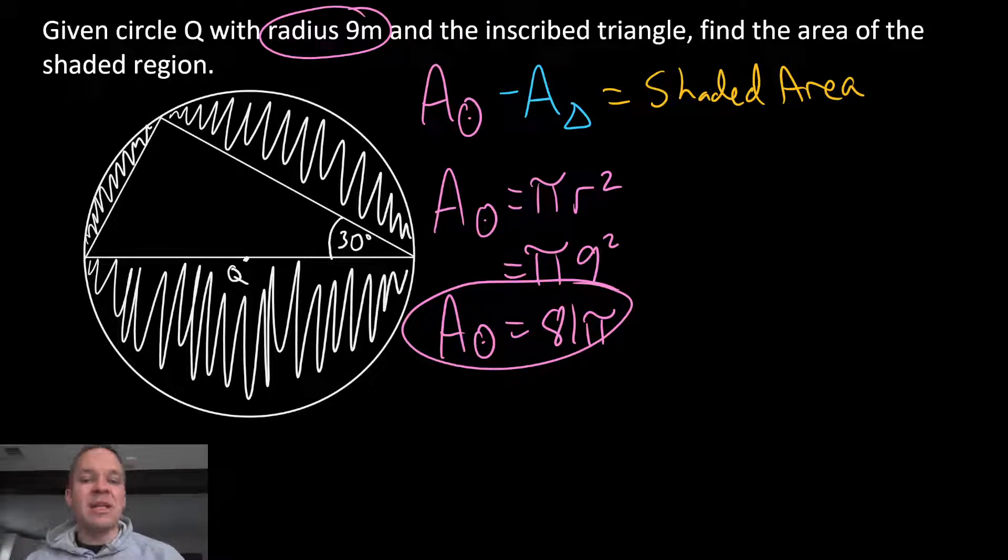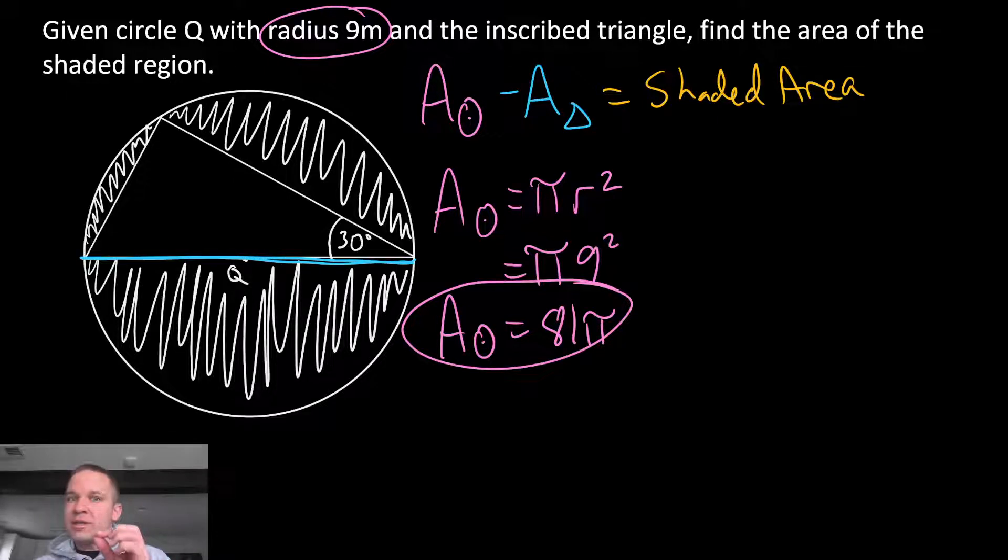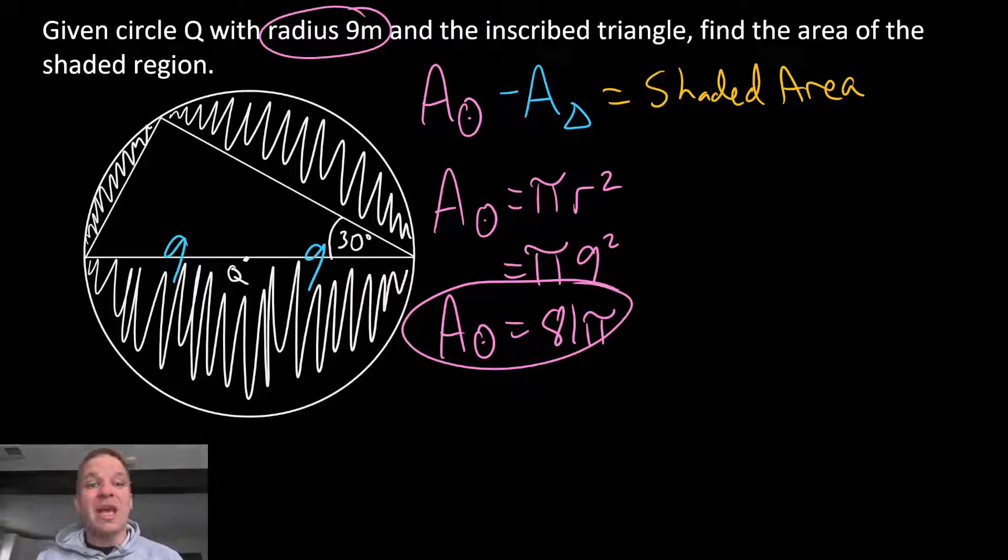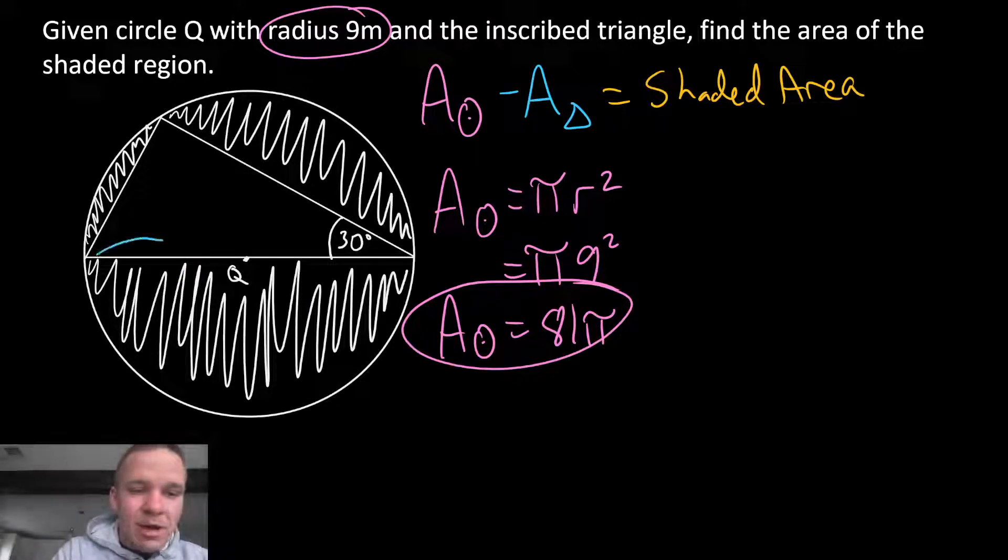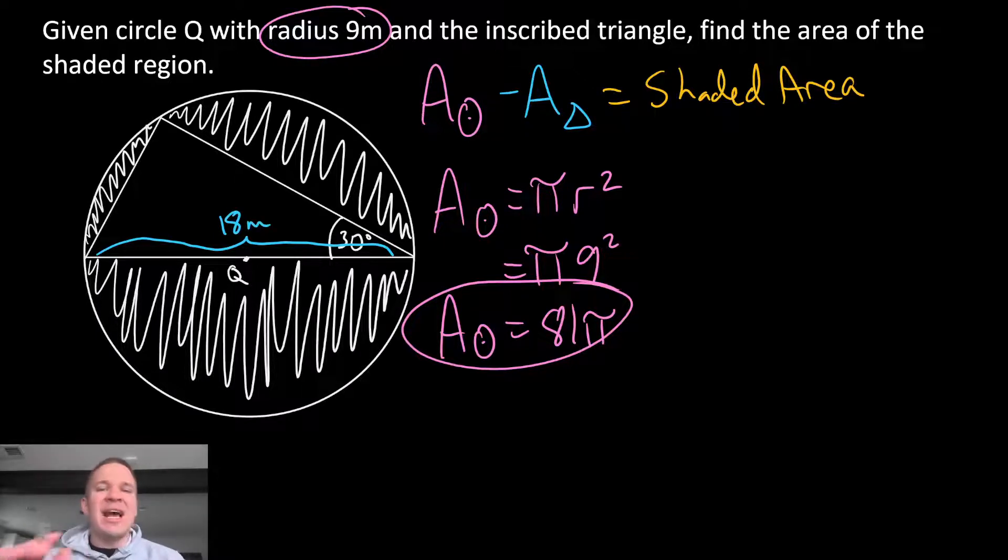Now we gotta move on to the area of the triangle, which is the more challenging part. Well, my radius, as we said, is 9, and if we look at this side right here of that triangle, that is not only a side of the triangle, it goes to the center of the circle, which makes it a diameter. So, if that's 9 and 9 for my radius and radius, my diameter is then going to be 18 meters. So let's jot that down, 18 meters.